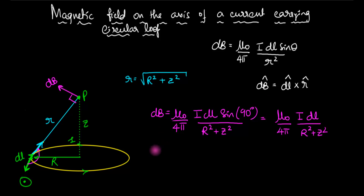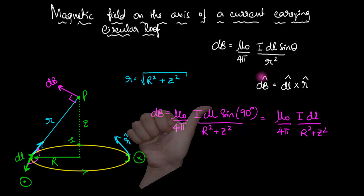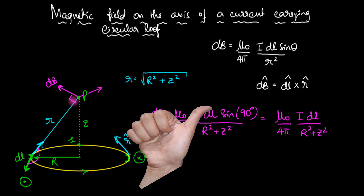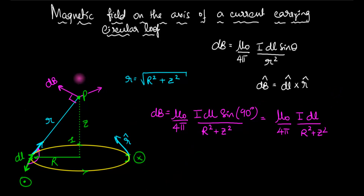For example, if you choose a current element diametrically opposite, dl would point inwards. Because dl would be inwards and the r vector would be in its direction, if you did dl cross r you would now see a magnetic field pointing in a different direction. Every single one will point in its own direction. If you were to draw all the vectors together, that's going to look like a cone.